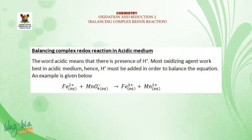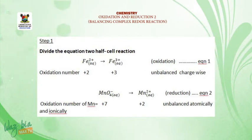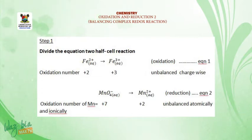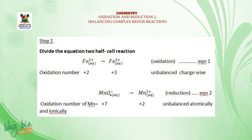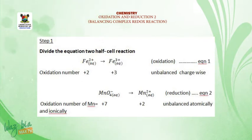In this case, we are asked to balance in acidic medium. Step 1: divide the equation into two half-cell reactions. The first will be Fe²⁺ → Fe³⁺, with oxidation numbers +2 and +3 respectively. For the second half equation, it will be MnO₄⁻ → Mn²⁺, with manganese going from oxidation number +7 on the reactant side to +2 on the product side. We see that both equations are not balanced atomically and ionically.